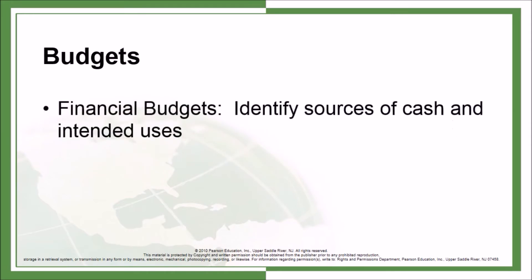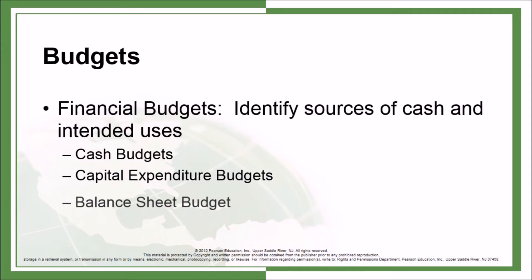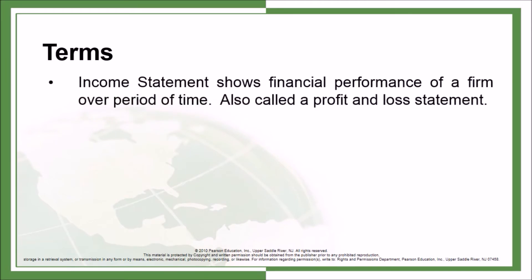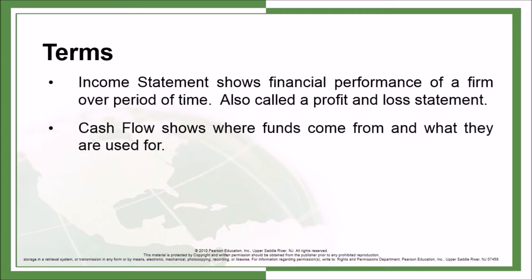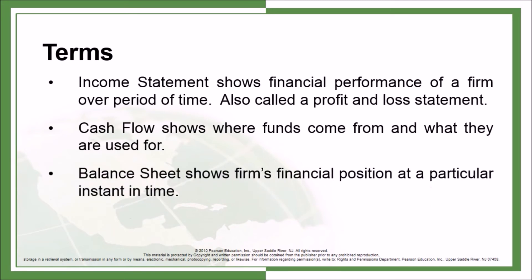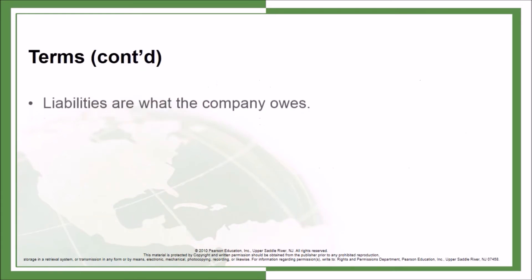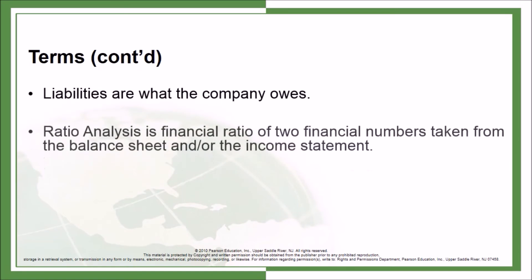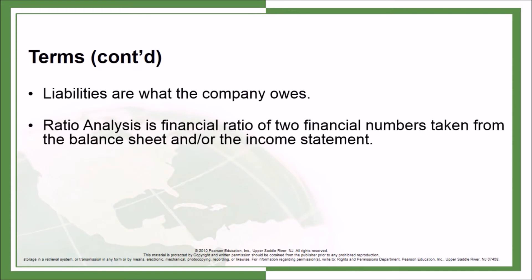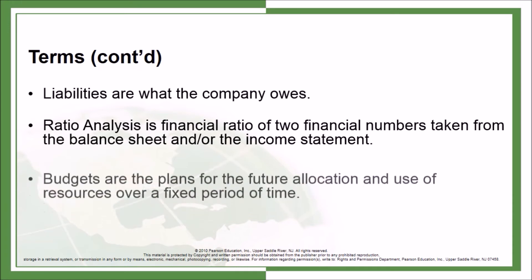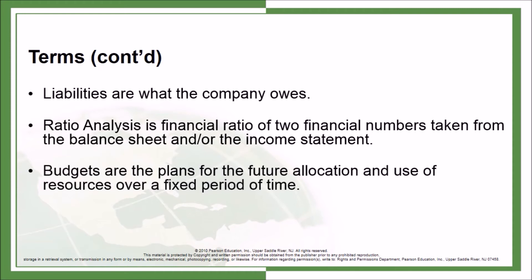Budgets: Financial budgets identify sources of cash and intended uses, such as cash budgets, capital expenditure budgets, and balance sheet budgets. Key terms: Income statement shows financial performance over a period of time, also called a profit and loss statement. Cash flow shows where funds come from and what they are used for. Balance sheet shows the firm's financial position at a particular instant in time. Assets are what the company owns; liabilities are what the company owes. Ratio analysis is a financial ratio of two numbers taken from the balance sheet and/or income statement. Funds are plans for future allocation and use of resources over a fixed period of time.